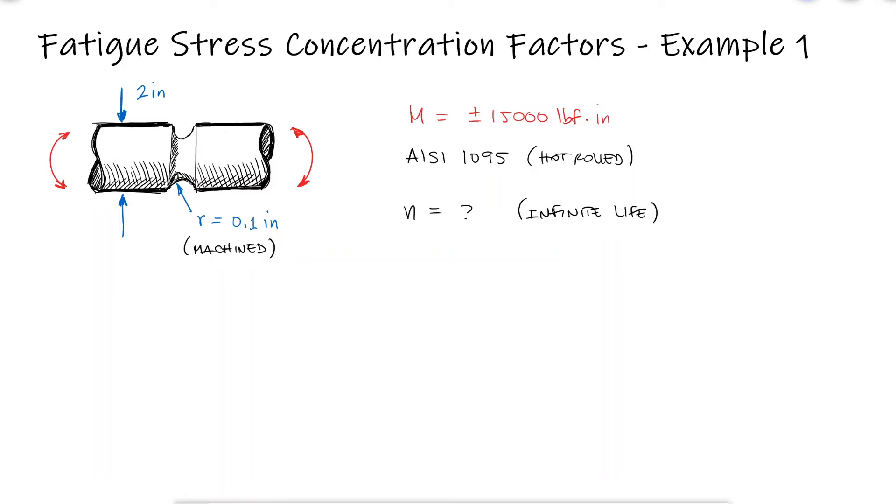We know that the strength we use for cyclic loading applications is the fatigue strength and specifically for infinite life we care about the endurance limit. This stress is compared to a completely reversed stress sigma AR. So we need to do two things. The first one we've done several times and is calculating the endurance limit. The second one is calculating that maximum alternating stress.